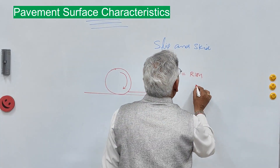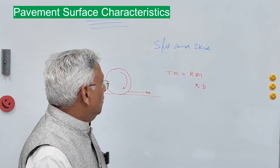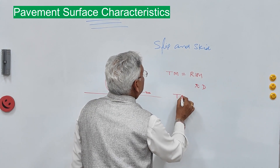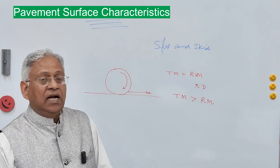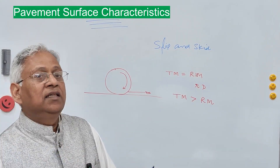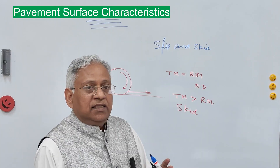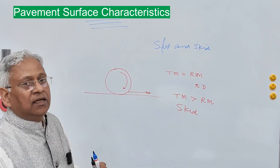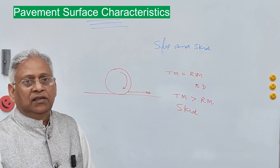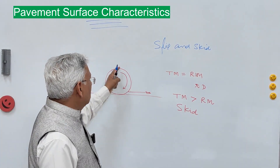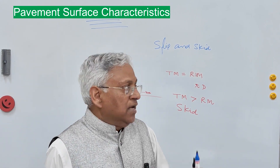In one revolution of the wheel, the distance traveled by the vehicle will be π × d, where d is the diameter. When translatory motion is more than the rotatory motion of the wheel — that is, rotation is less but forward movement is more — that is called skidding. To avoid skidding, the friction resistance must be greater than the braking force. In extreme condition when 100% brakes are applied, there will be no rotatory motion, only translatory motion.